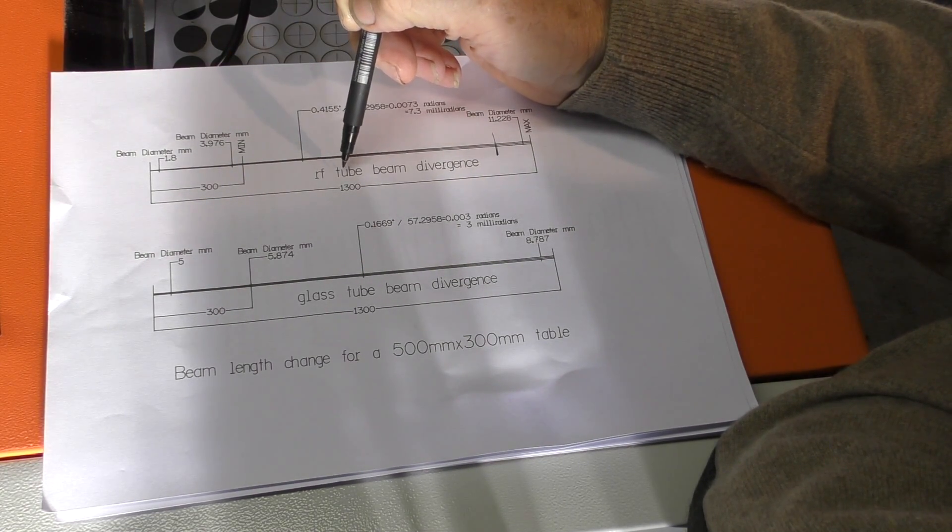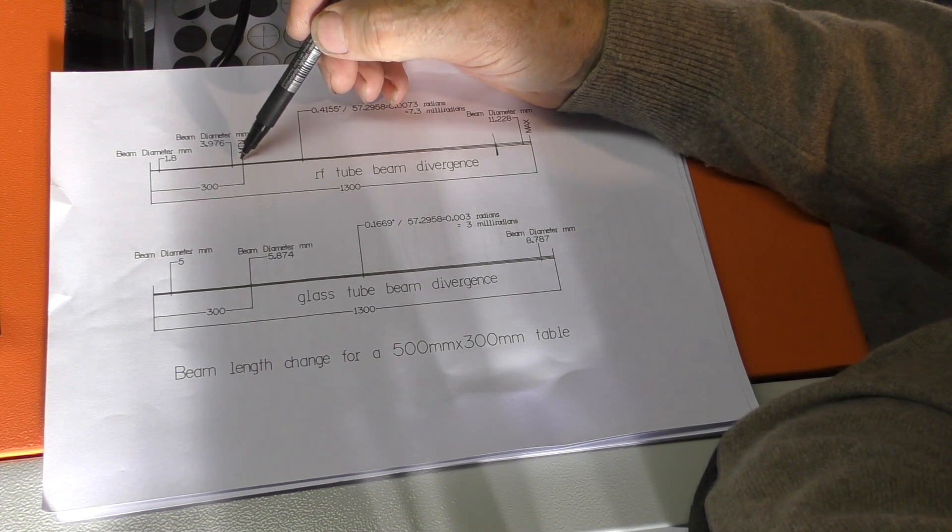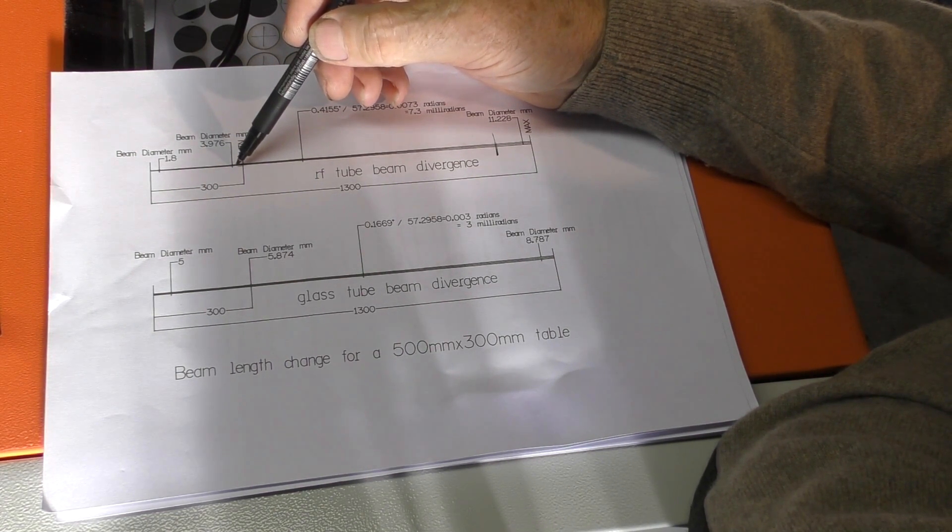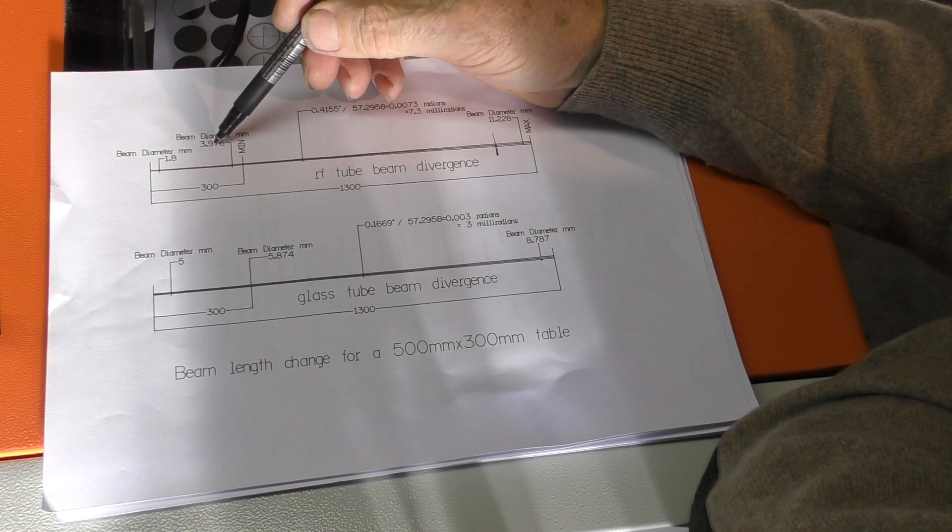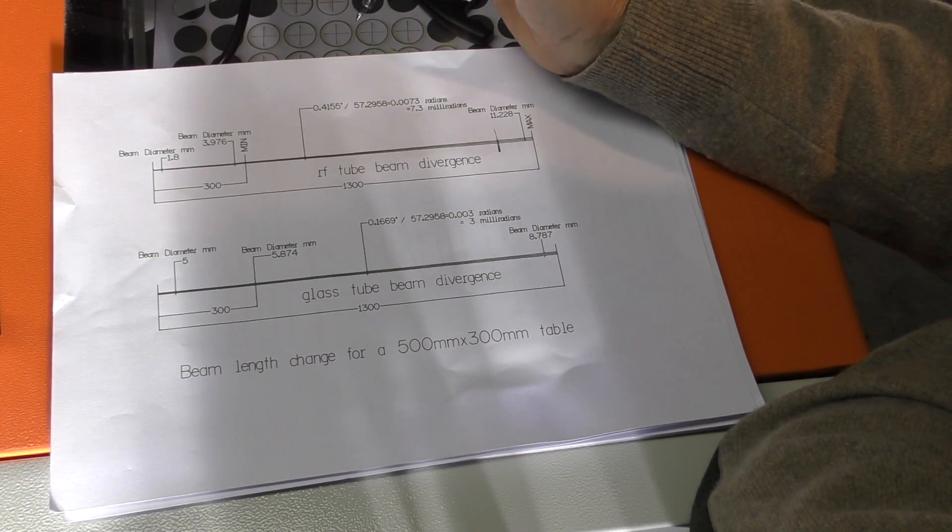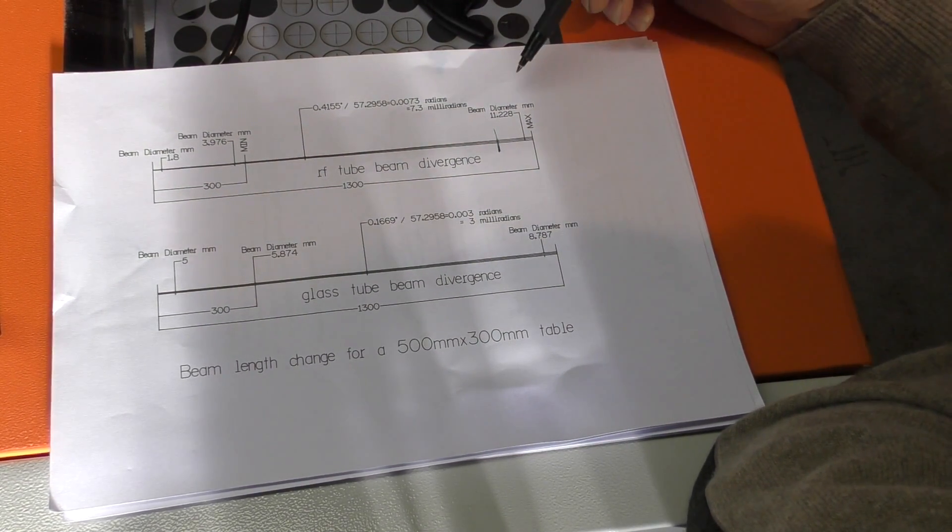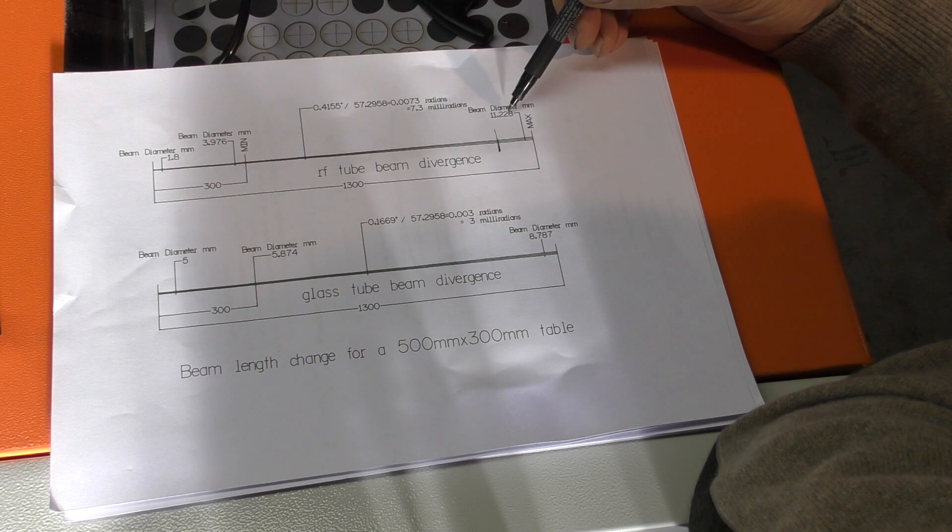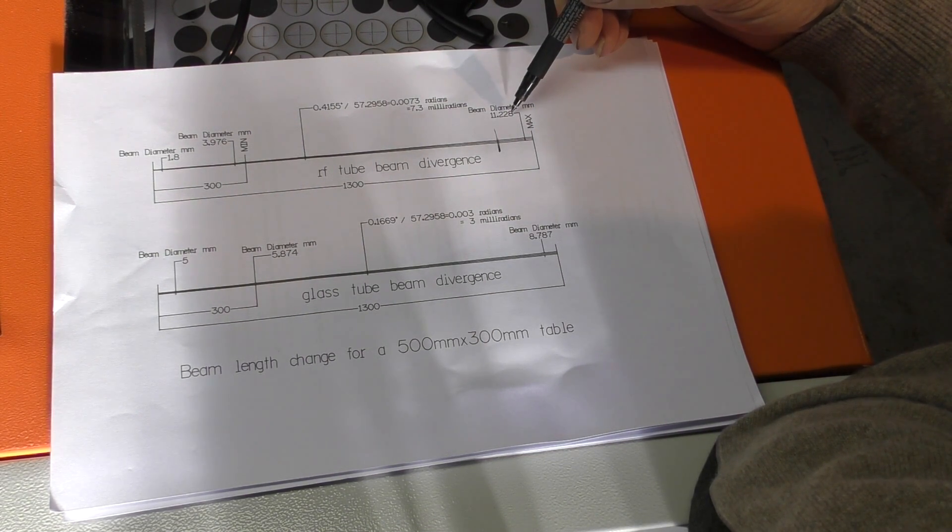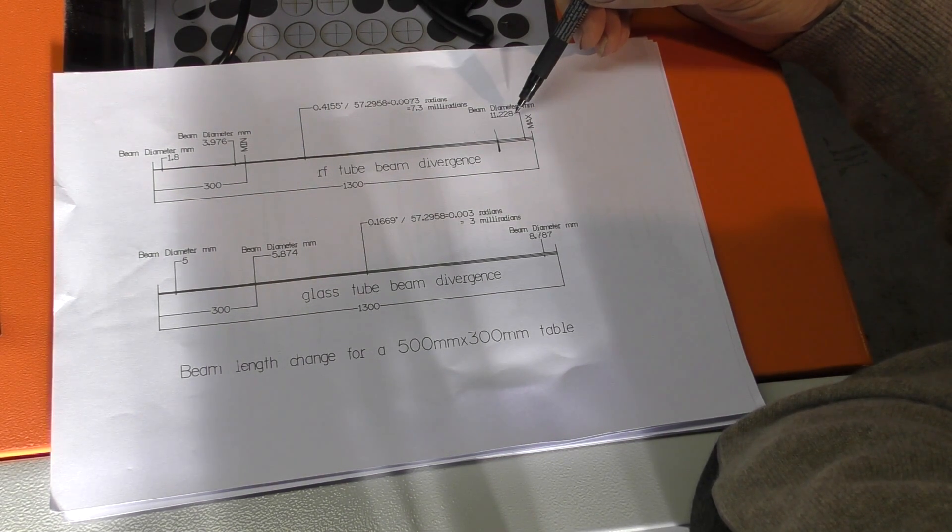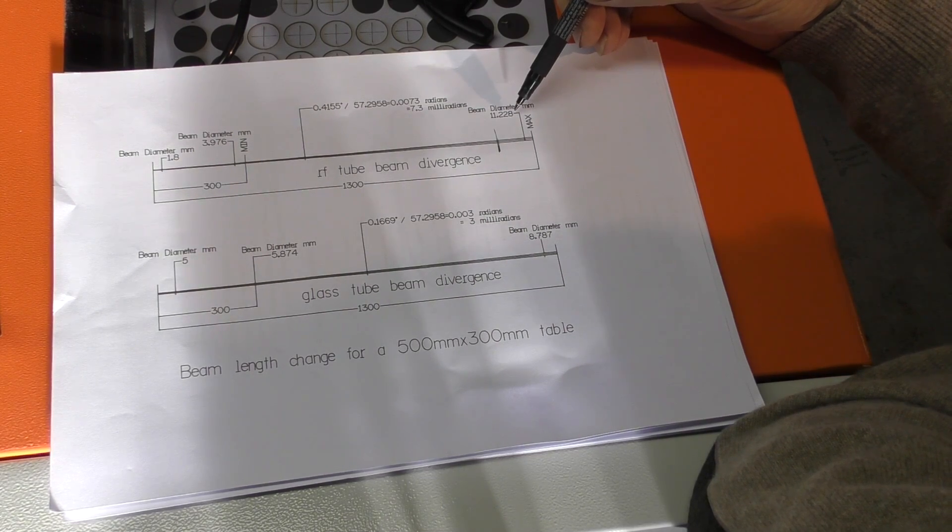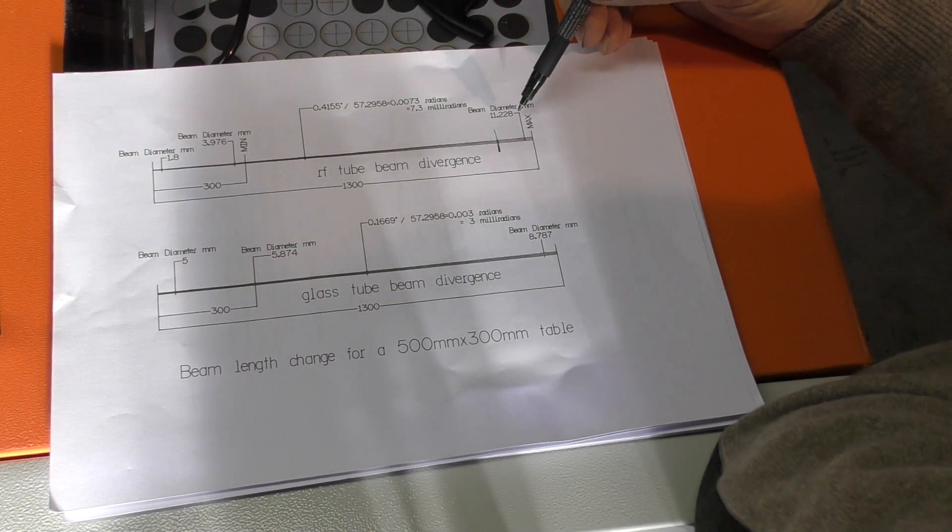The essence of this story is when we use an RF tube beam, we start off here at the back corner with a beam that is say four millimeters diameter, and by the time we get to the front corner, that beam has grown to over 11 millimeters diameter by the time it gets to hitting the lens. That's a massive change.